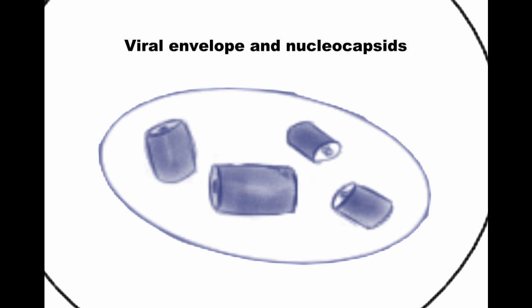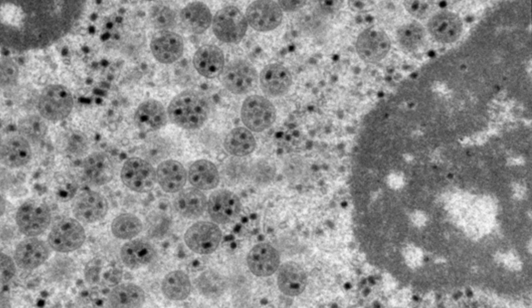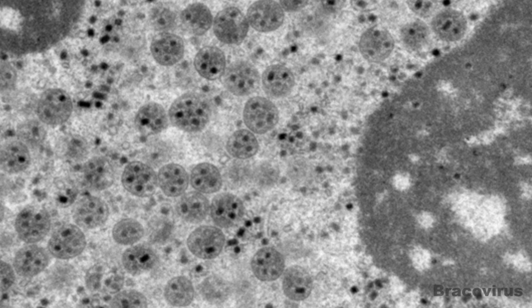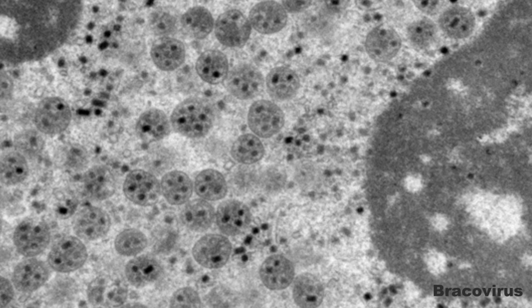One function is to prevent immune cells, called hemocytes, from bonding to the wasp's eggs.